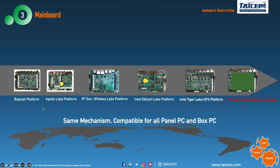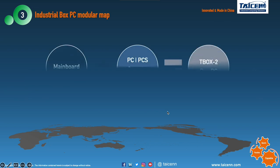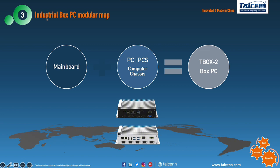Here you see our box PC modules map. Main board plus computer traces becomes a tbox2 box PC — it's very simple. We have two tbox2-XS0 series and three tbox2-XS5 series, and these two different series support different main boards.